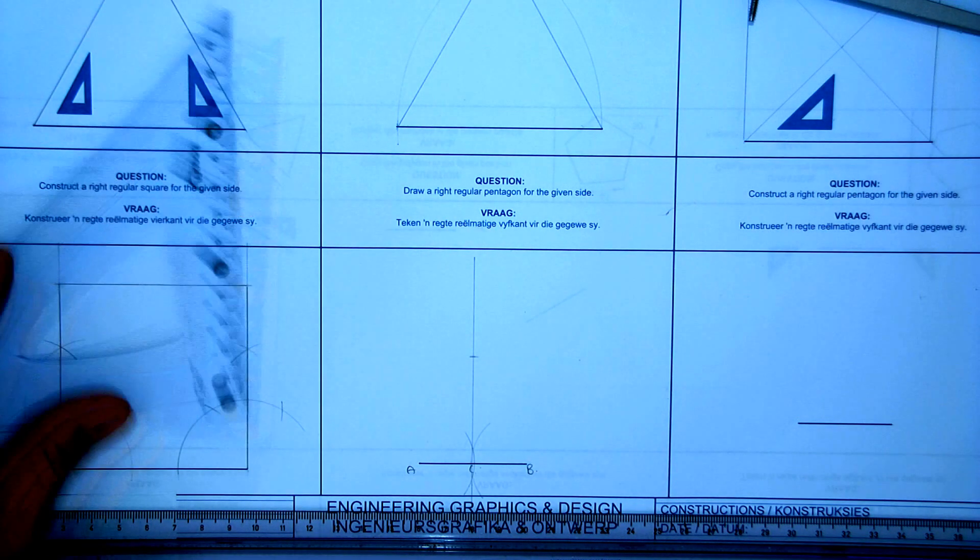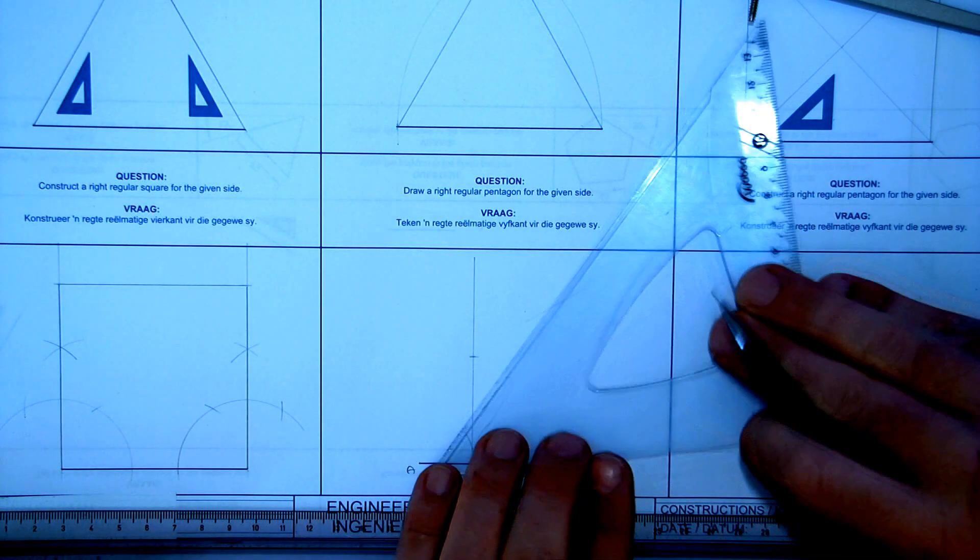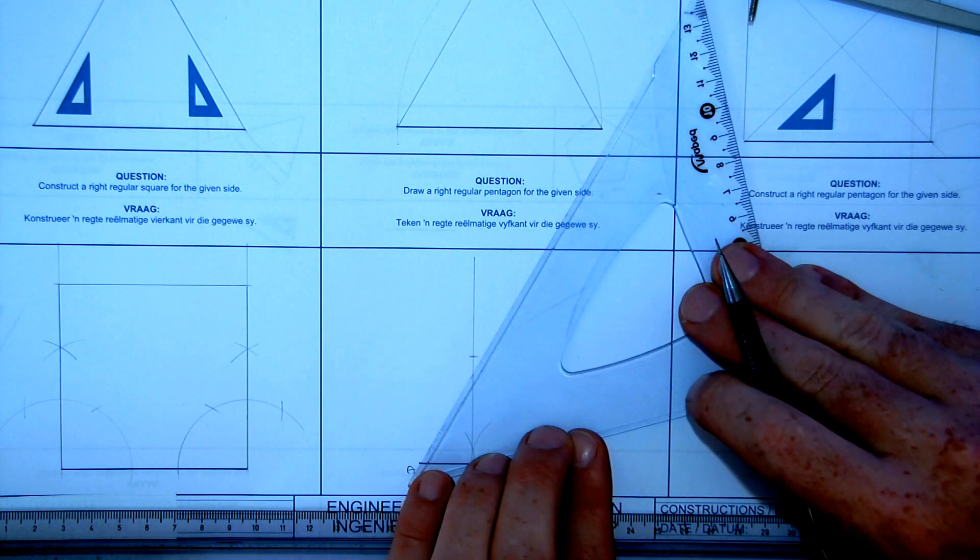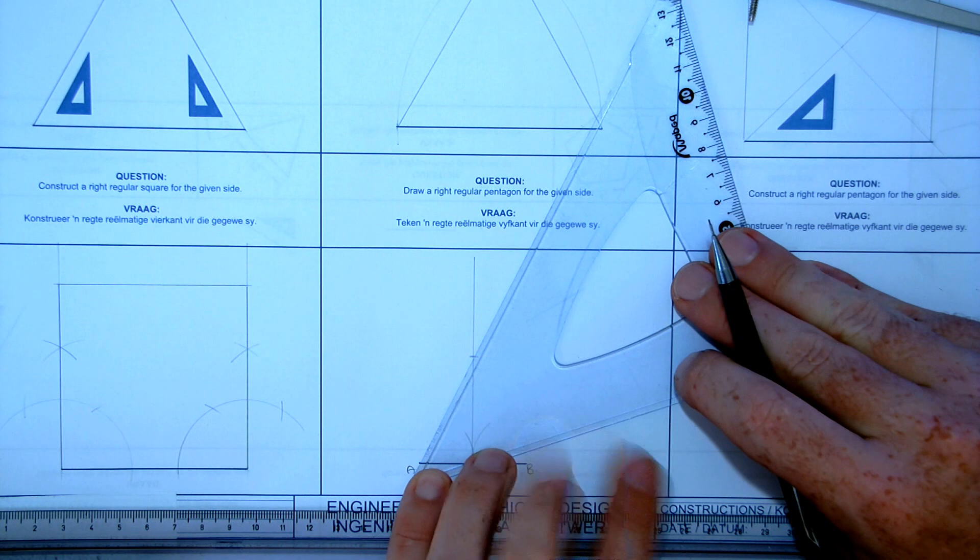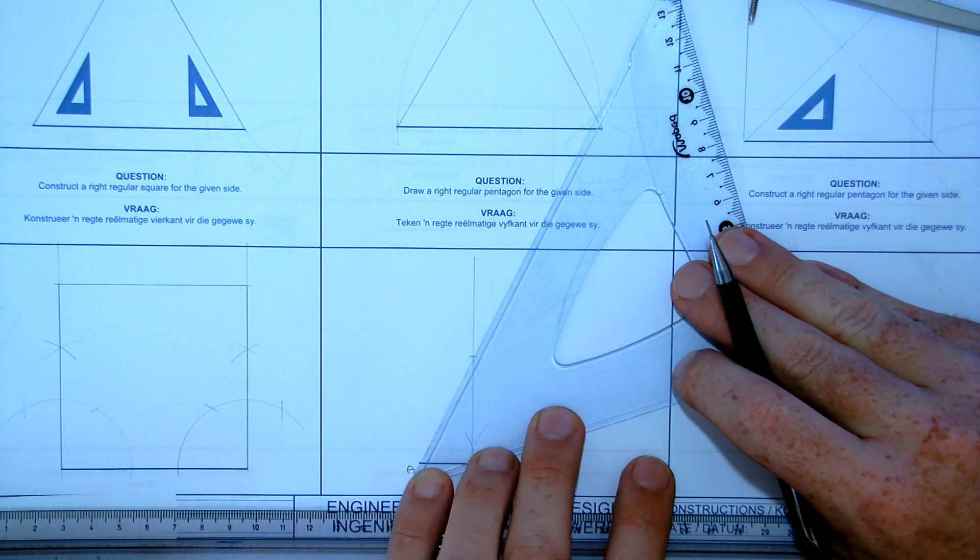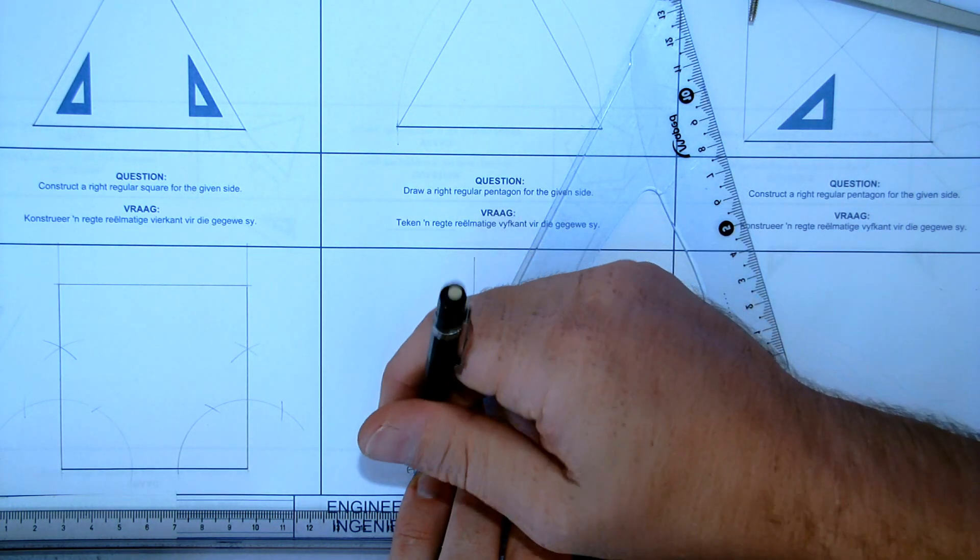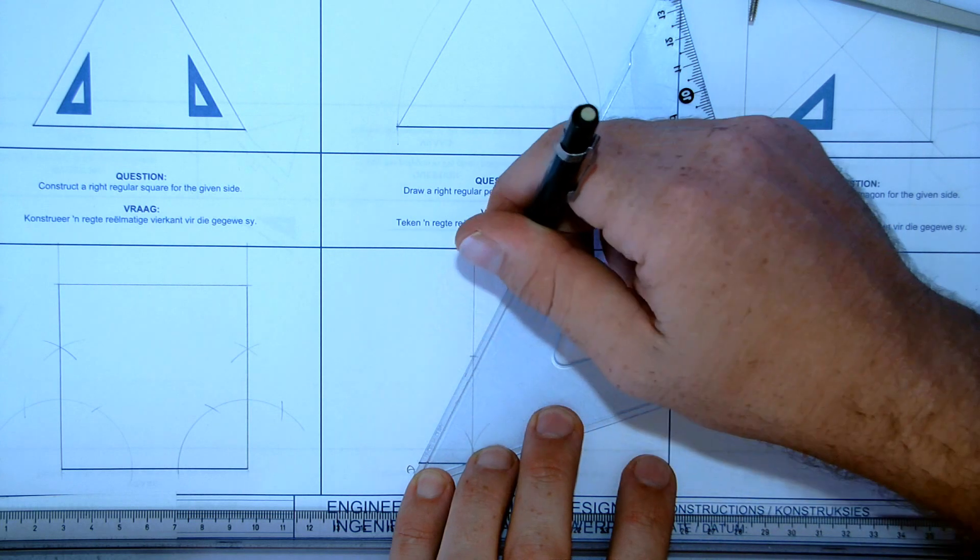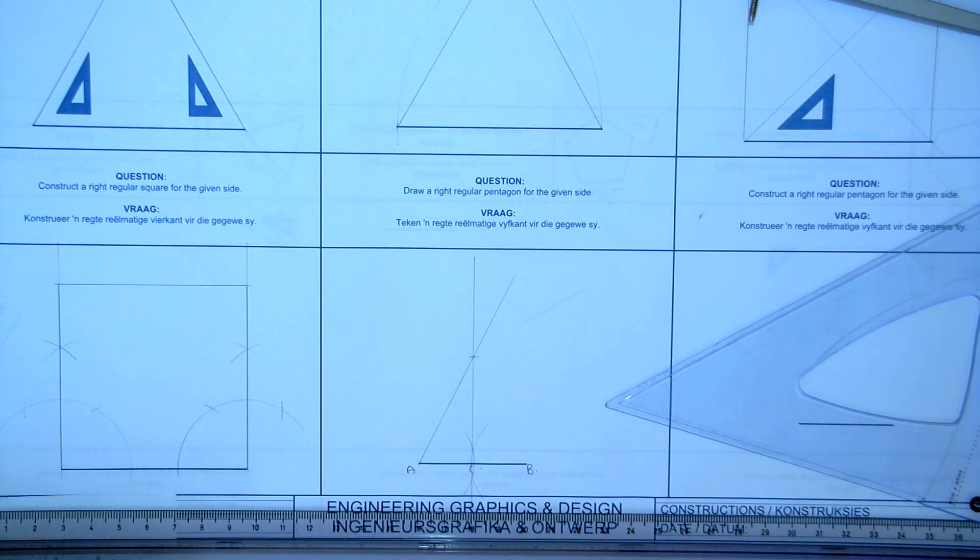Now, you are going to take your compass or your triangle or a ruler. You are going to connect A to that point. And you are going to extend it. Again, this is construction. Please do not draw it too dark.